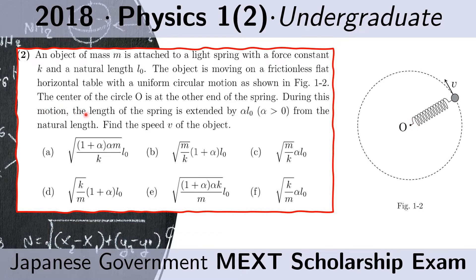During this motion, the length of the spring is extended by alpha L sub 0, where alpha is greater than 0, from the natural length. Find the speed V of the object.